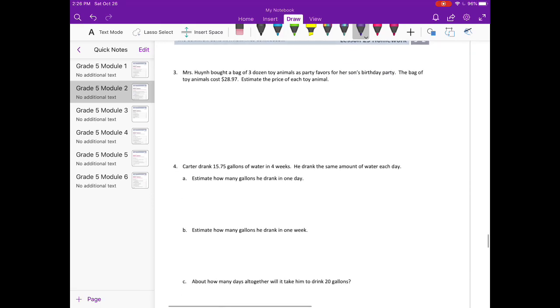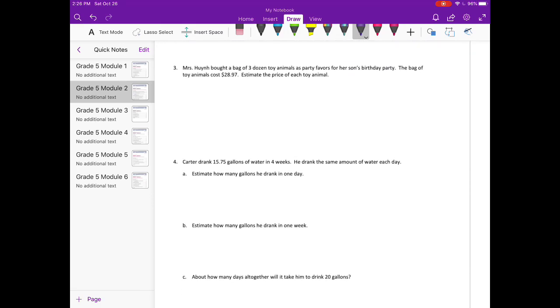Number 3: Mrs. Hune bought a bag of 3 dozen toy animals as party favors for her son's birthday party. The bag cost $28.97. Estimate the price of each toy animal. 3 dozen means 3 times 12, so she bought 36 toy animals for $28.97.